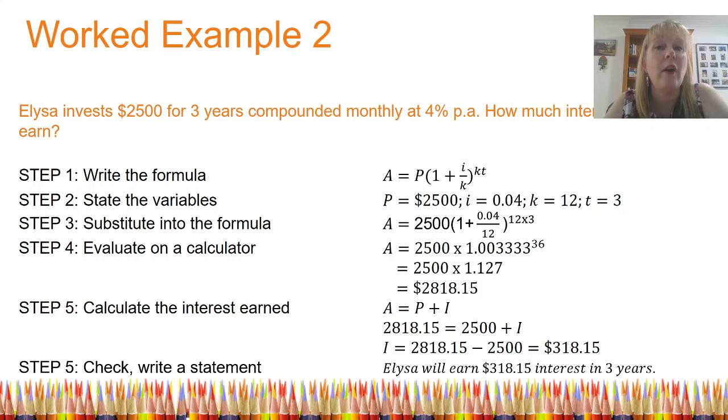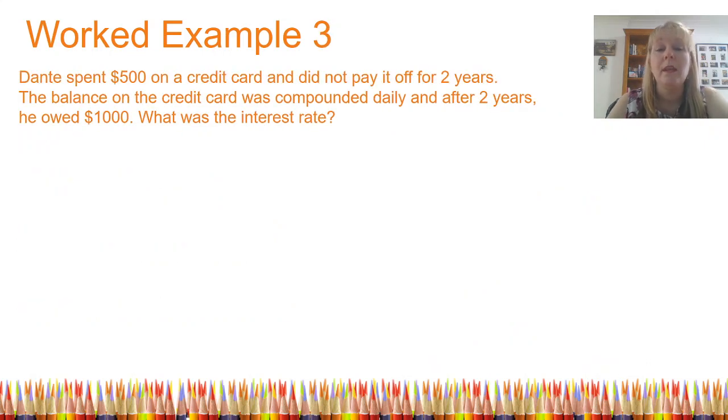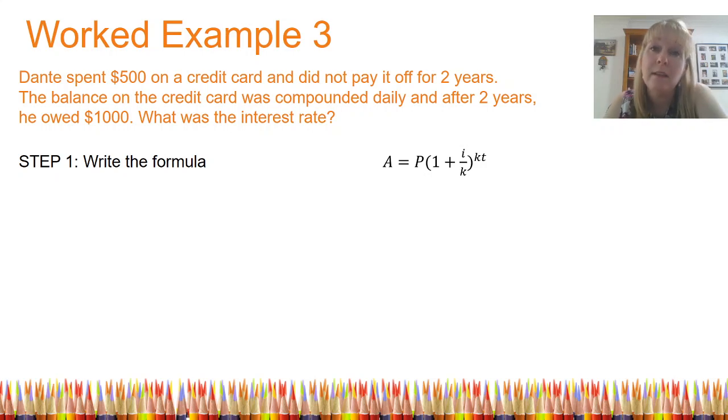Let's look at another example where we're finding a different variable. In worked example three, we have Dante who has spent $500 on a credit card, and he did not pay it off for two whole years. The balance on the credit card was compounded daily as most credit cards are. And after two years, he owed $1,000. Wow, I'm glad I don't have Dante's debt. So what was the interest rate? Well, firstly, I'm going to write the formula. And once again, because I've got compounding throughout the year, I'm going to use the modified formula.